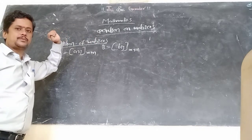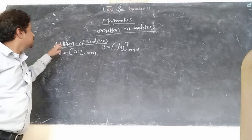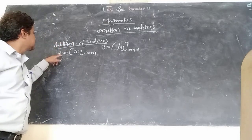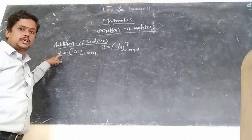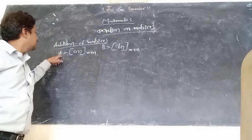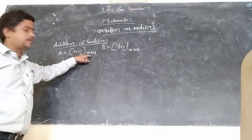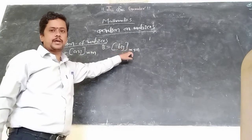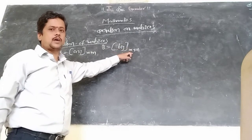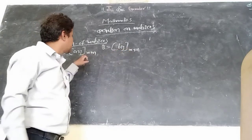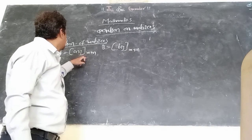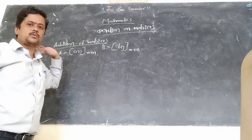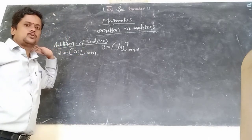We have different types of operations. The first one is addition of matrices. Let us consider two matrices A(ij) of order M by N and B(ij) of order M by N — two matrices of the same order. Before going to add any two matrices, it should satisfy some conditions.